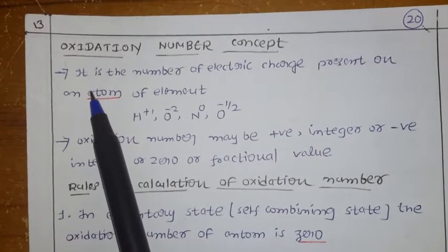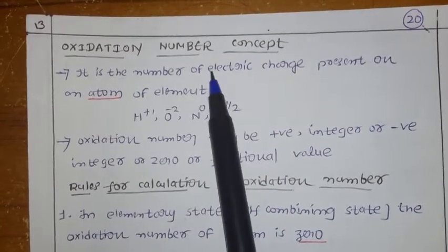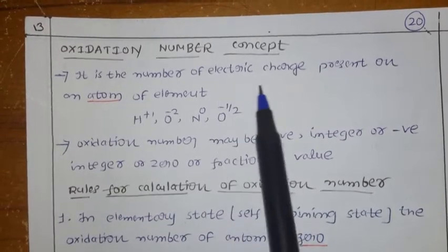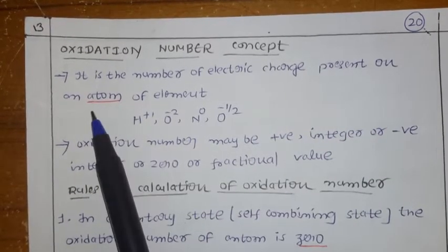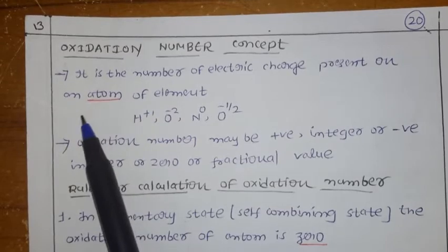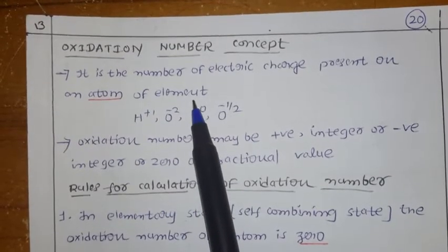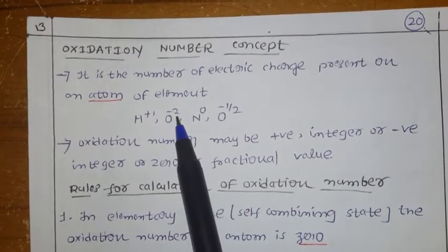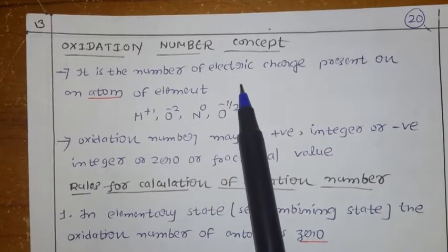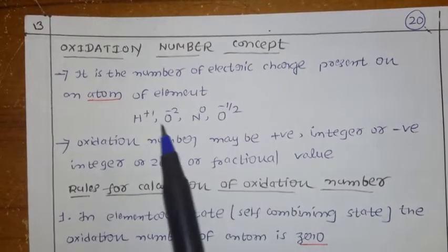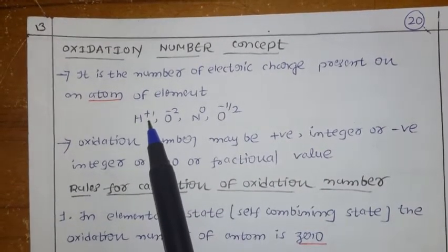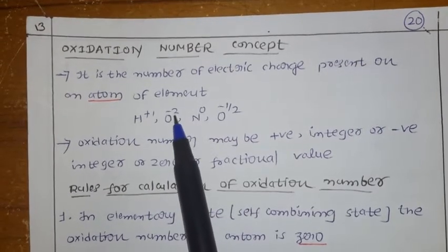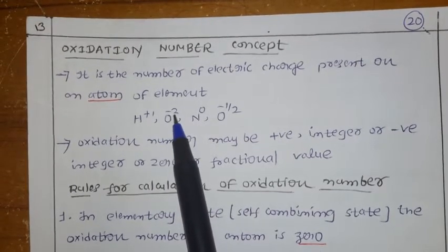How can you define the oxidation number? It is the number of electric charge present on an atom of element. The charges present in an element are called as oxidation number. For hydrogen H+, plus 1 is the oxidation number. For oxygen O, minus 2 is the oxidation number.